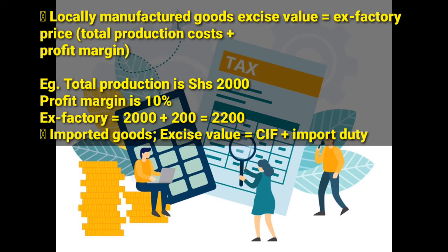For locally manufactured goods, the excisable value is the ex-factory price. To get the ex-factory price, we take total production costs plus the profit margin. For example, if the total production cost is 2,000 and the profit margin is 10% of total production cost, that is 200. So the ex-factory price is 2,000 + 200 = 2,200. The ex-factory price equals the excisable value of locally manufactured goods.